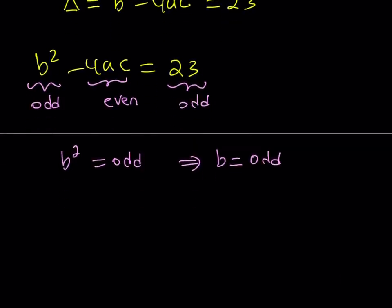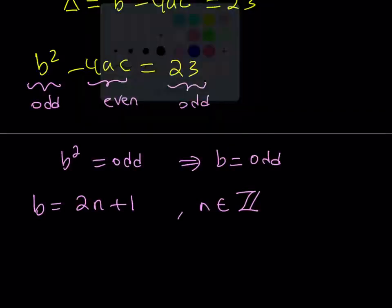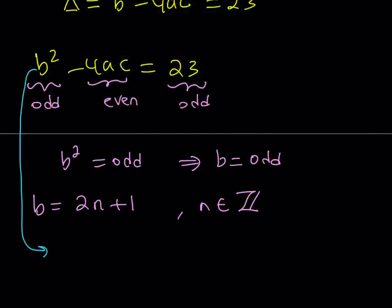And that implies a very important result — this is actually the breaking point for this problem. Since b is odd, I can replace b with 2n plus 1, where n is an integer. 2n plus 1 represents an odd number, and we're going to substitute this. Substitution plays a very important role in solving many problems. So I'm going to replace b with 2n plus 1, which gives me: the quantity 2n plus 1, squared, minus 4ac equals 23.